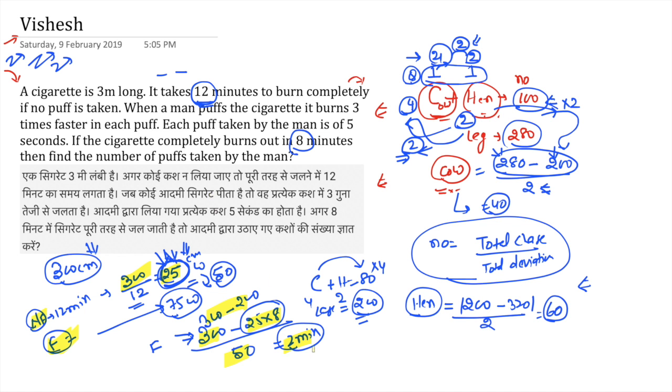In 2 minutes you take all the puffs. Now see the question. If each puff is 5 seconds, 5 seconds convert to minutes, that is 120 divided by 5 is 24. Puffs you take, the answer comes. Simple question, this is it.